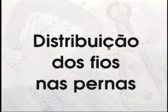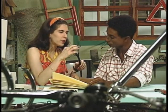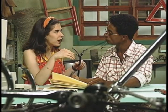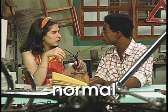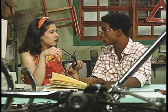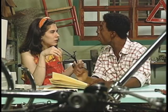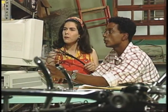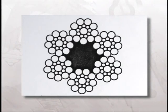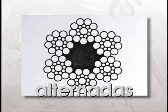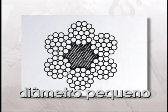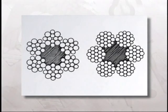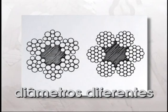Chegou a hora de falar sobre a distribuição dos fios nas pernas. Os fios nas camadas de cada perna do cabo não são sempre iguais. O mais importante é a distribuição normal, onde os fios dos arames e das pernas têm um só diâmetro: o seal, o filler e o warrington. Na distribuição seal, as camadas são alternadas em fios grossos e finos. Na distribuição filler, as pernas têm fios de diâmetros pequenos usados como enchimento dos vãos dos fios grossos. Na distribuição warrington, os fios das pernas têm diâmetros diferentes numa mesma camada.